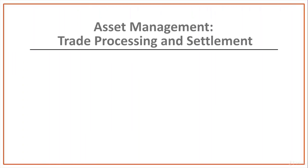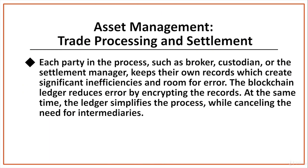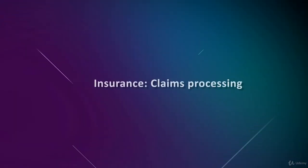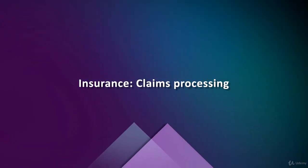Each party in the process, such as the broker, custodian, and the settlement manager, keeps their own record, which creates significant inefficiencies and room for errors. But a blockchain ledger reduces error by encrypting the record. At the same time, the ledger simplifies the process while cancelling the need for middlemen.